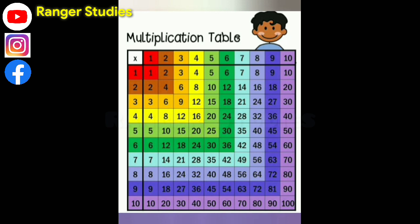5 1s are 5, 5 2s are 10, 5 3s are 15, 5 4s are 25, 5 5s are 25, 5 6s are 30, 5 7s are 35, 5 8s are 40, 5 9s are 45, 5 10s are 50.